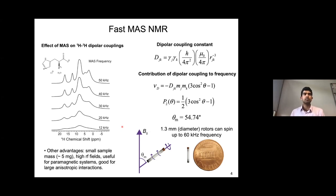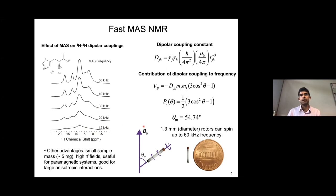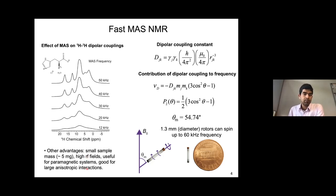The way we want to approach this problem is by using fast magic-angle spinning NMR. Fast magic-angle spinning helps narrow proton line widths, because proton NMR spectra in the solid state are severely broadened due to homonuclear dipolar couplings. By performing magic-angle spinning, we can start to partially average these homonuclear dipolar couplings, which results in the spectra being narrowed. There are also other advantages, including small sample mass and much higher out-of-fields, which is very useful for exciting broad spectra.